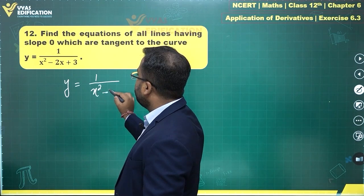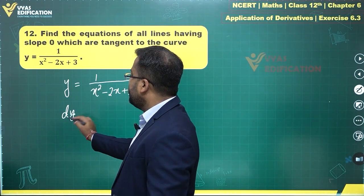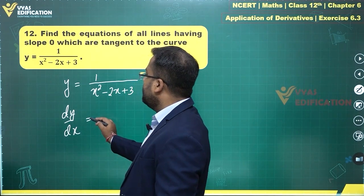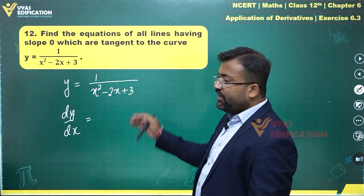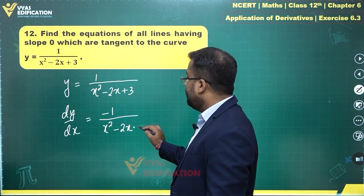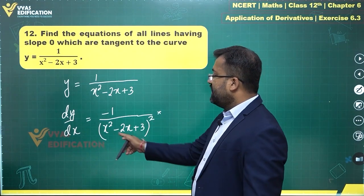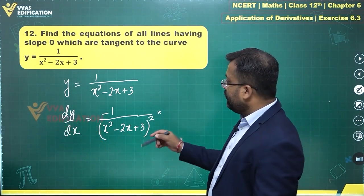So let's begin with this: y equals 1 over x squared minus 2x plus 3. Let's find the derivative. dy/dx will be equal to—since this is 1 upon some function, the derivative is minus 1 upon that function squared, times the derivative of this which is 2x minus 2.